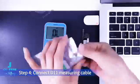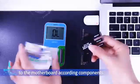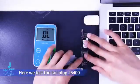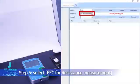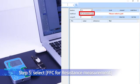Step 4: Connect D11 measuring cable to the motherboard according components. Here we test the tail plug J6400 on the iPhone X motherboard. Step 5: Select FFC for resistance measurement.